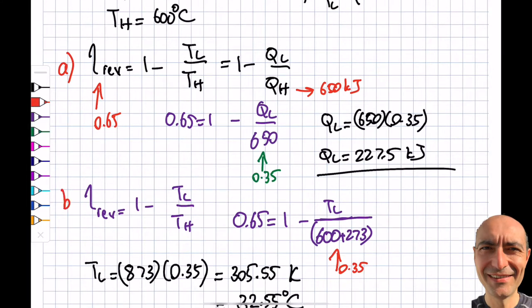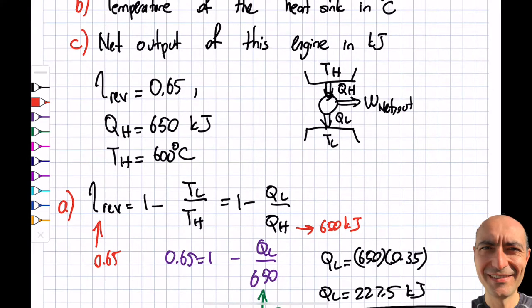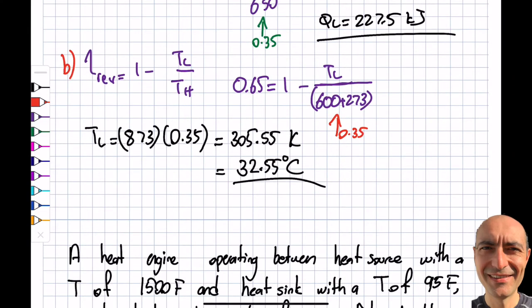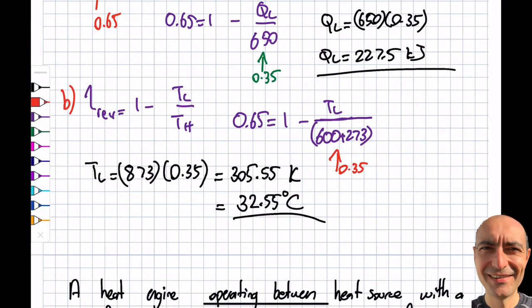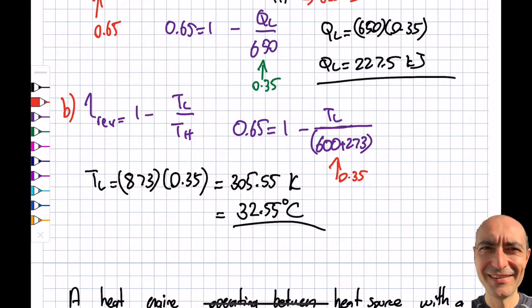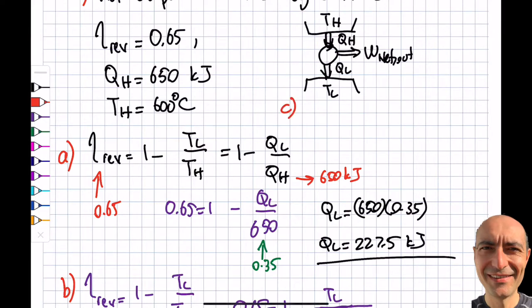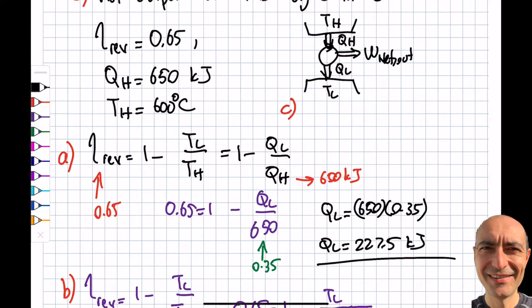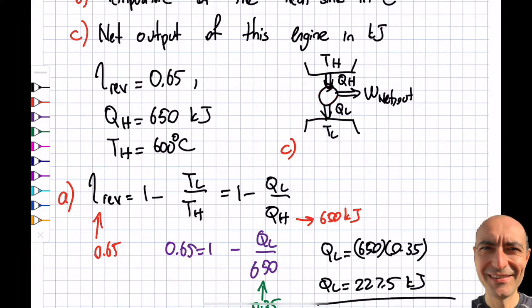Part C asks for the net output of this engine. Looking at this cycle as a system, I can apply the first law. W_net_out = QH - QL. This is from the first law—QH is coming in, QL is going out, W_net is coming out.